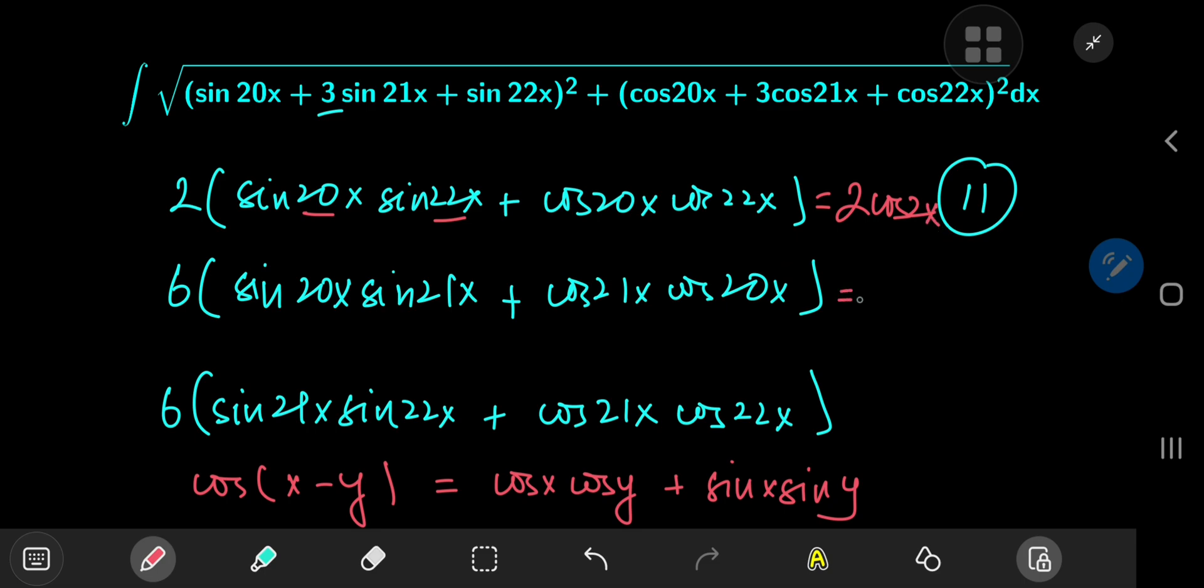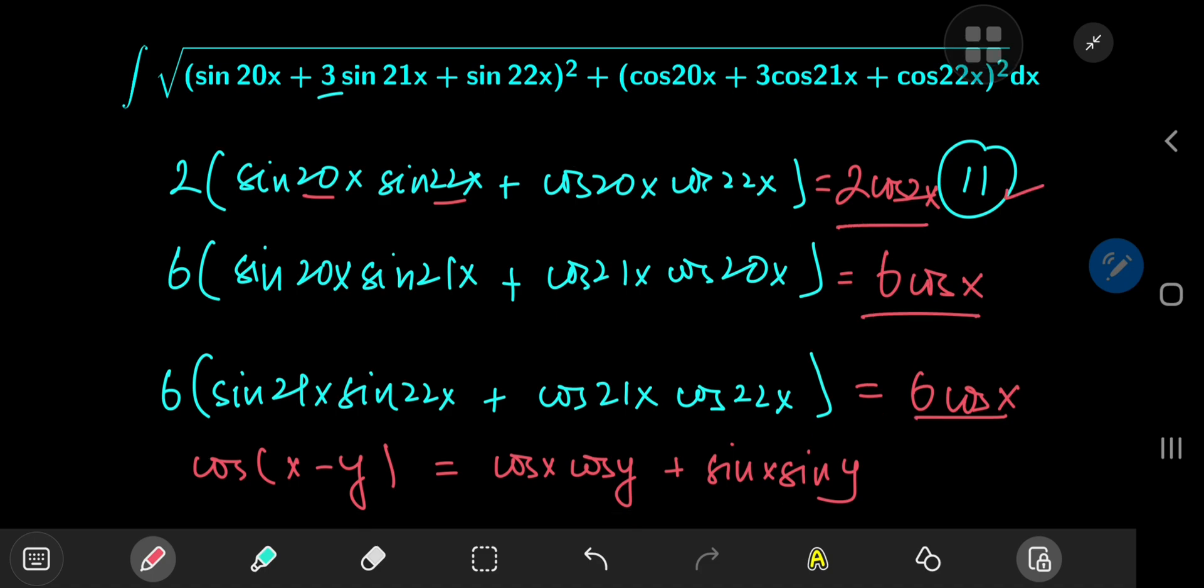So you have 2 times cosine 2x, and for the second expression, we have 6 times the cosine of x, and the same thing for the third expression. And this simplifies our work quite a bit.